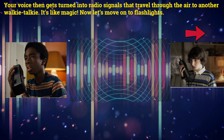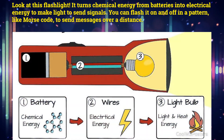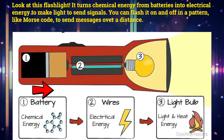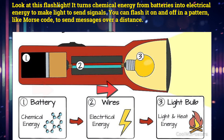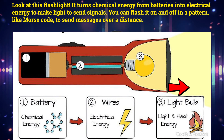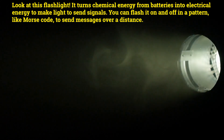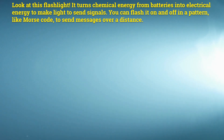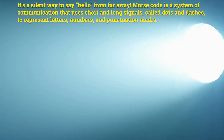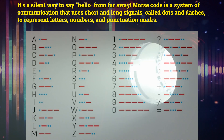Now let's move on to flashlights. Look at this flashlight. It turns chemical energy from batteries into electrical energy to make light to send signals. You can flash it on and off in a pattern like Morse code to send messages over a distance. It's a silent way to say hello from far away.